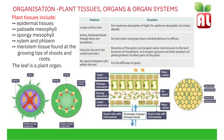The spongy mesophyll has many air spaces, for the exchange of gases. Gases need to make their way to and from the palisade mesophyll — these gases are oxygen and carbon dioxide. Gases enter the leaf through the stomata, which are the tiny pores on the lower surface of the leaf.